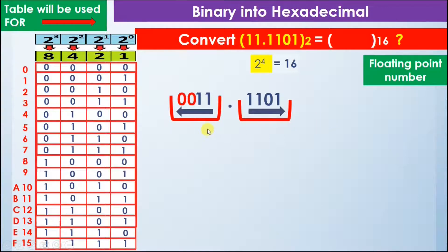We will find their values in the table. First, we will find the value 0011 in the table. Here is the value 0011, and it is equal to hexadecimal digit 3, so we write 3 here.